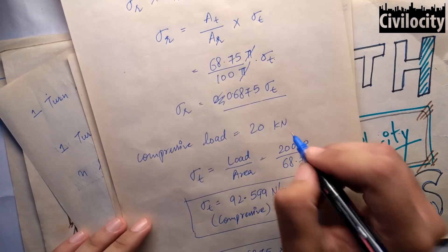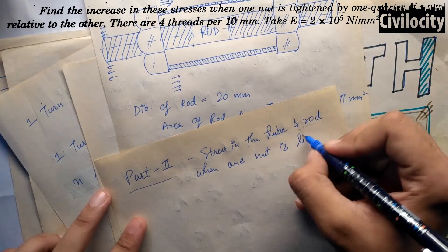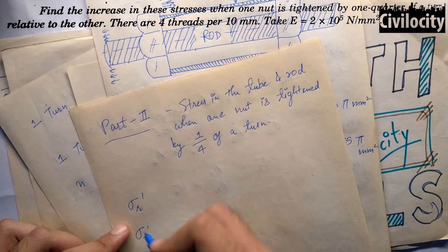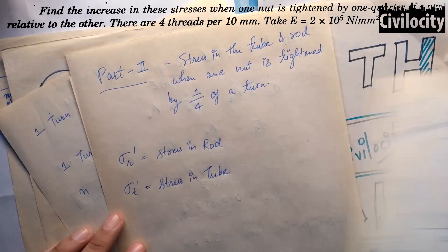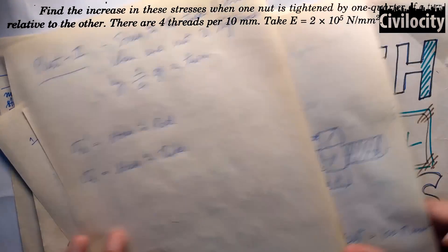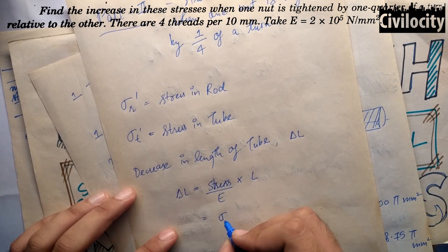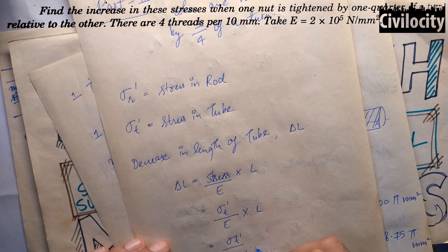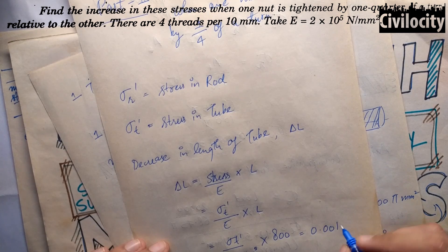Now for Part 2: we need to find the stresses due to tightening the nut by one quarter of a turn. Let sigma_r dash and sigma_t dash be the stresses in the rod and tube due to this tightening. When the nut is tightened, the tube decreases in length by delta_L equals (sigma_t_dash / E) times L, giving 0.004 times sigma_t_dash, using E equals 2 times 10 to the power 5 and L equals 800 mm.